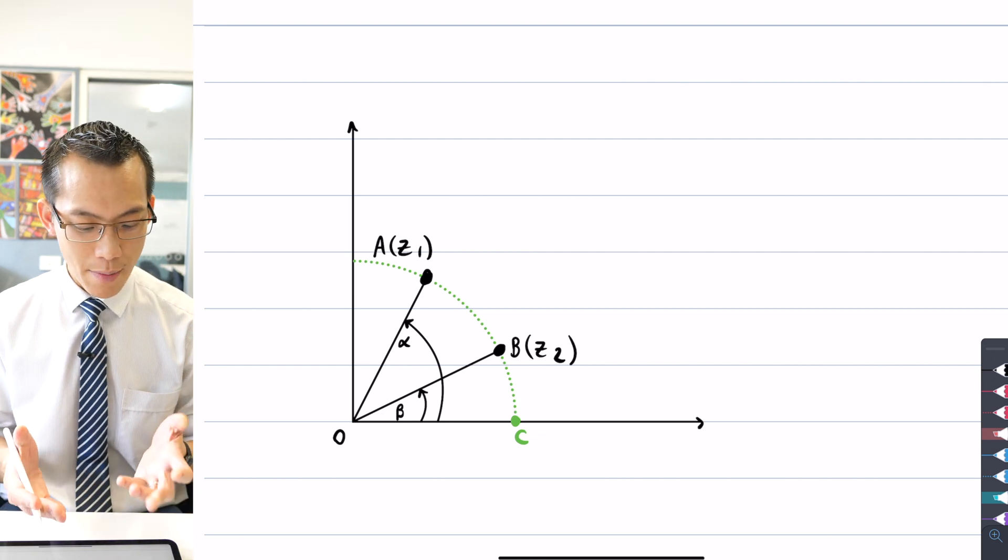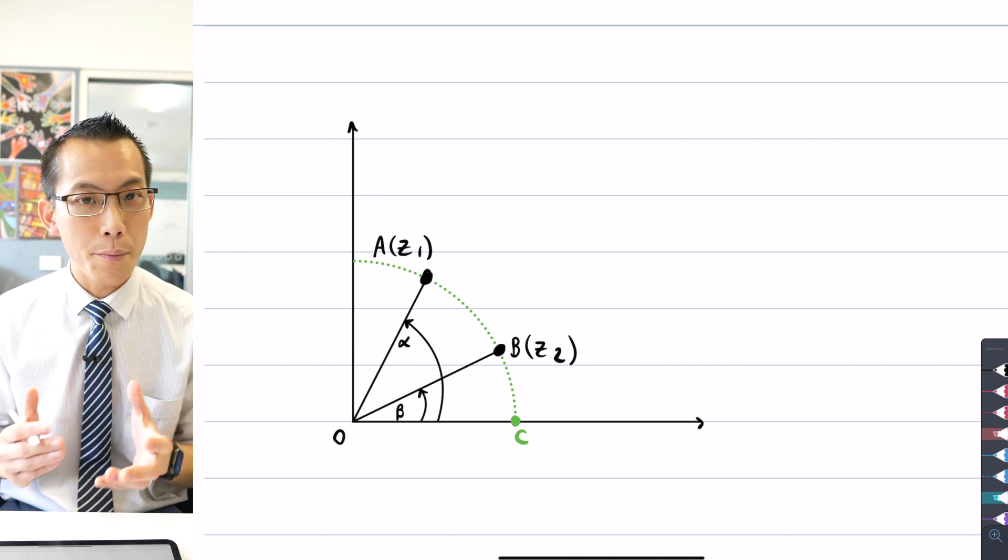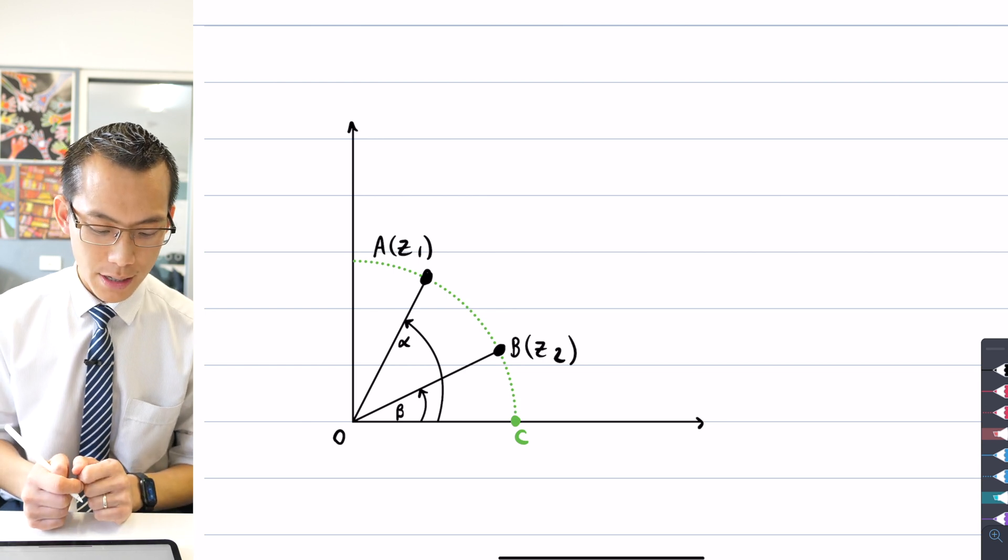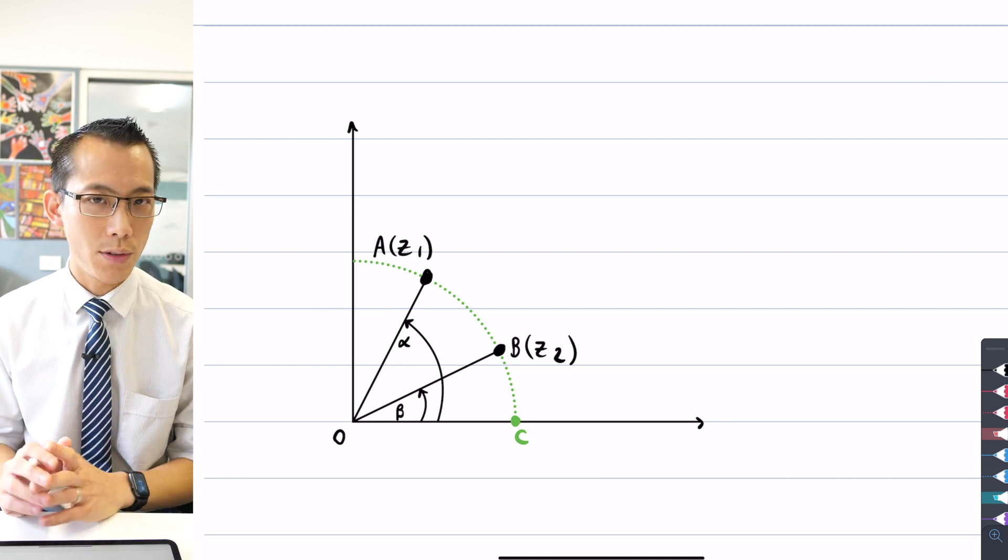You can see I've marked in angles of alpha and beta, because just like the very first time I tried this question, alpha and beta really can be equal to anything. You will notice that I've positioned Z1 and Z2 in the first quadrant, and that's just for convenience.